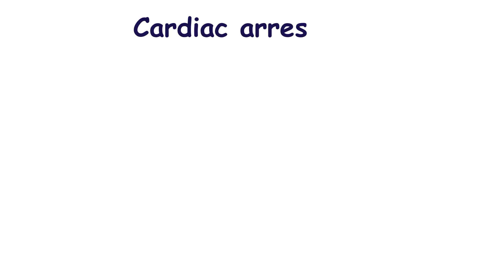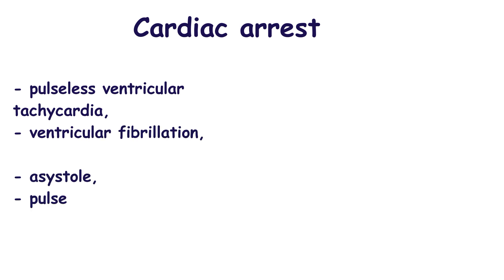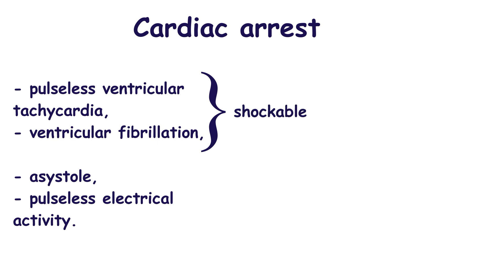There are four main cardiac rhythm abnormalities registered during cardiac arrest: pulseless ventricular tachycardia, ventricular fibrillation, asystole, and pulseless electrical activity. It is reasonable to divide these cardiac arrhythmias into shockable and non-shockable. Pulseless ventricular tachycardia and ventricular fibrillation belong to shockable rhythms. Asystole and pulseless electrical activity belong to non-shockable rhythms.